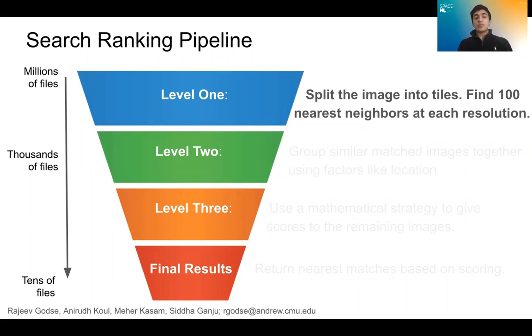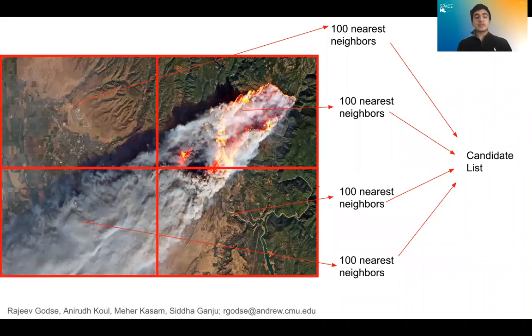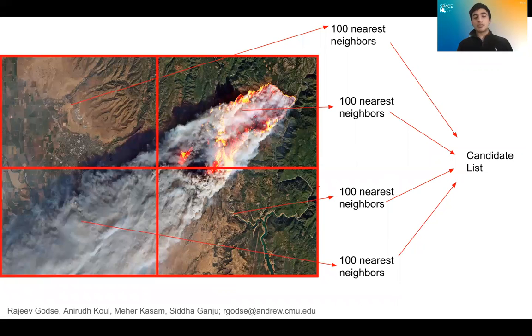Similarly, we were motivated to take a bunch of matches arising from each tile and gradually narrow them down. In Level 1, we broke the image down into tiles and found 100 nearest neighbors for each tile. Those candidates then comprised a candidate list.